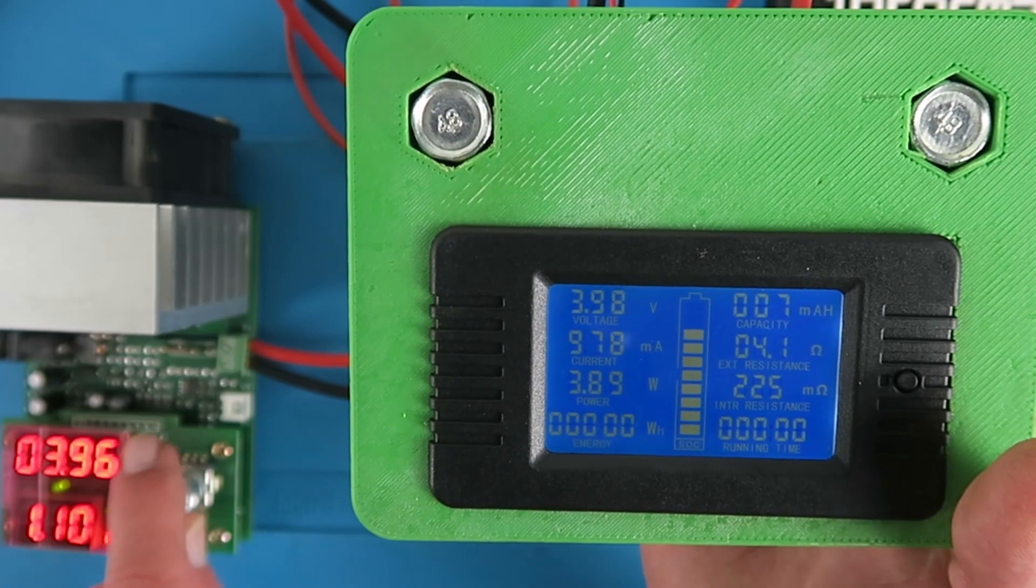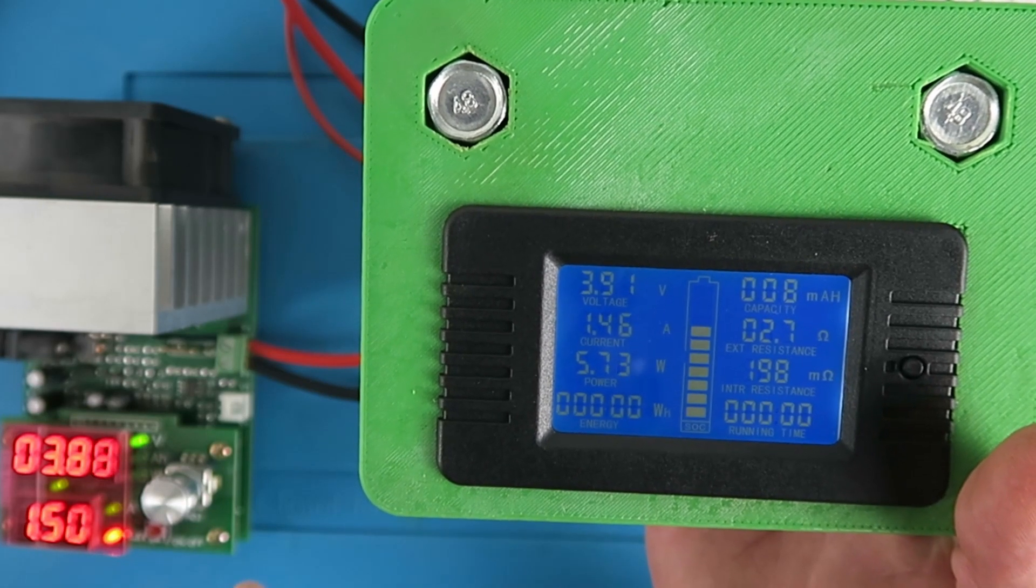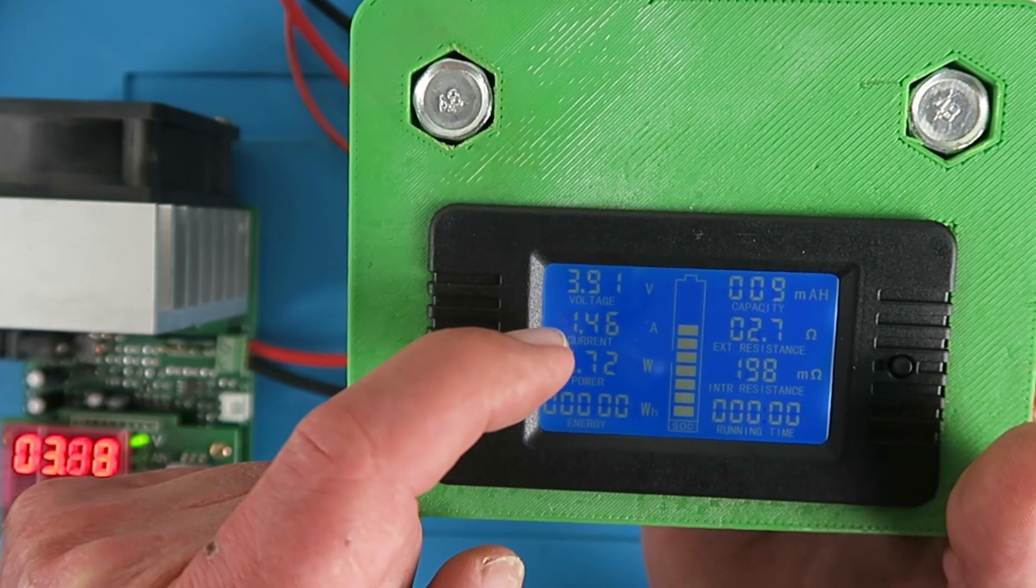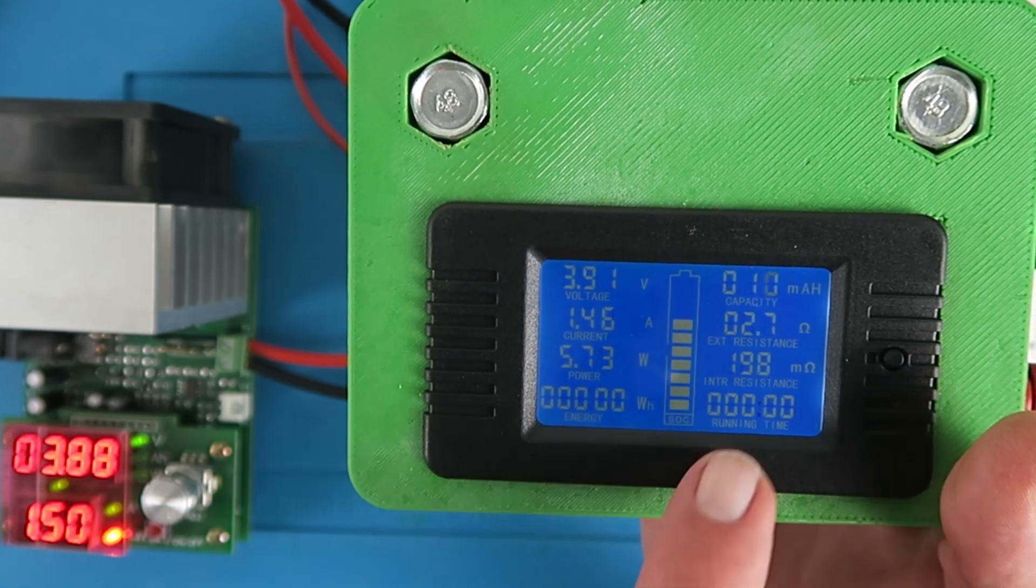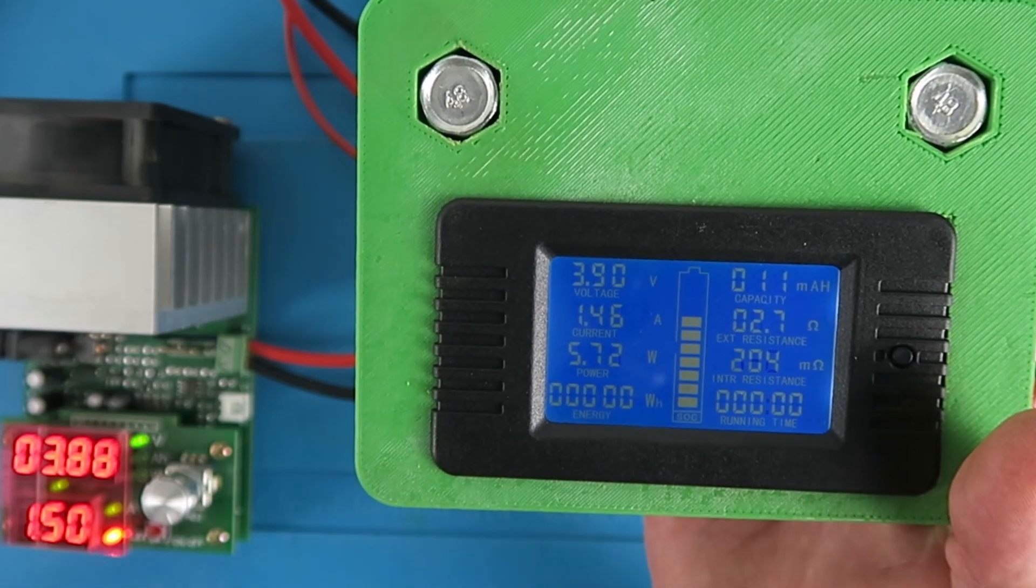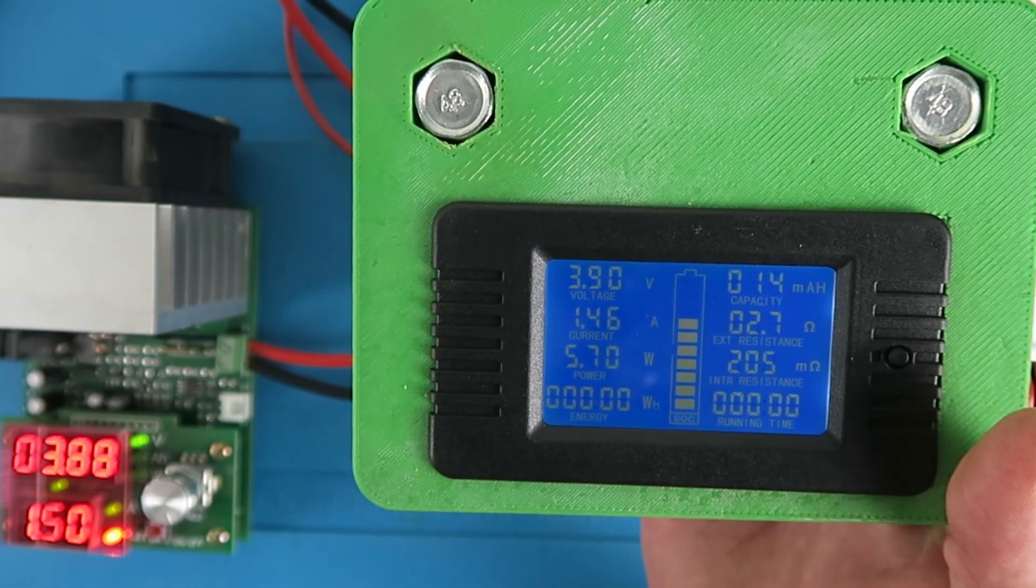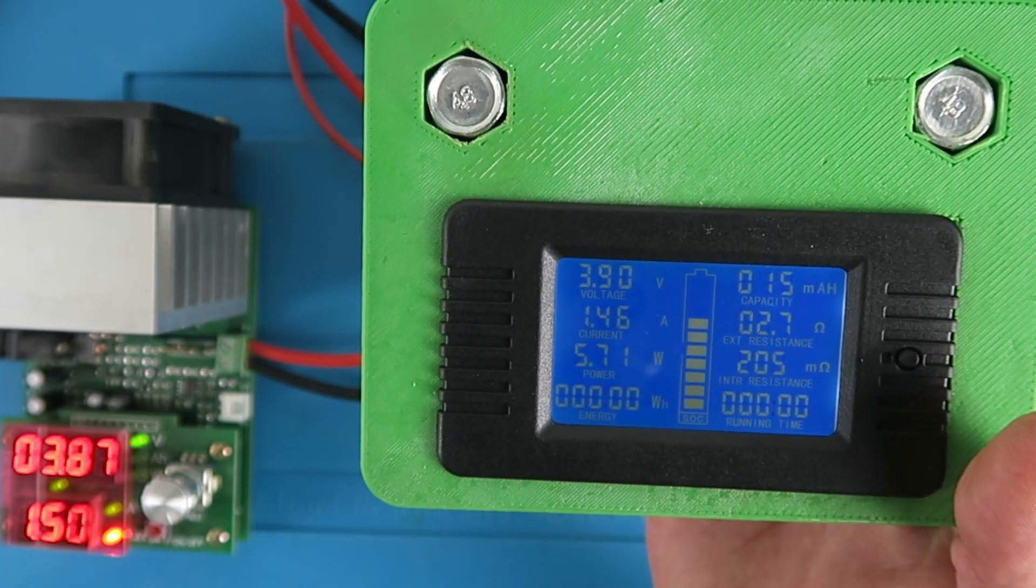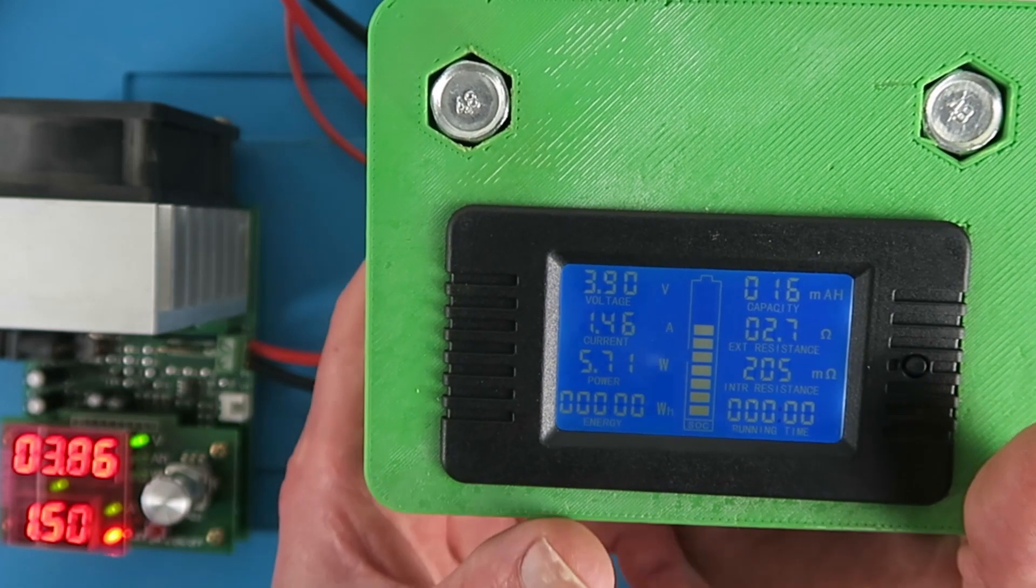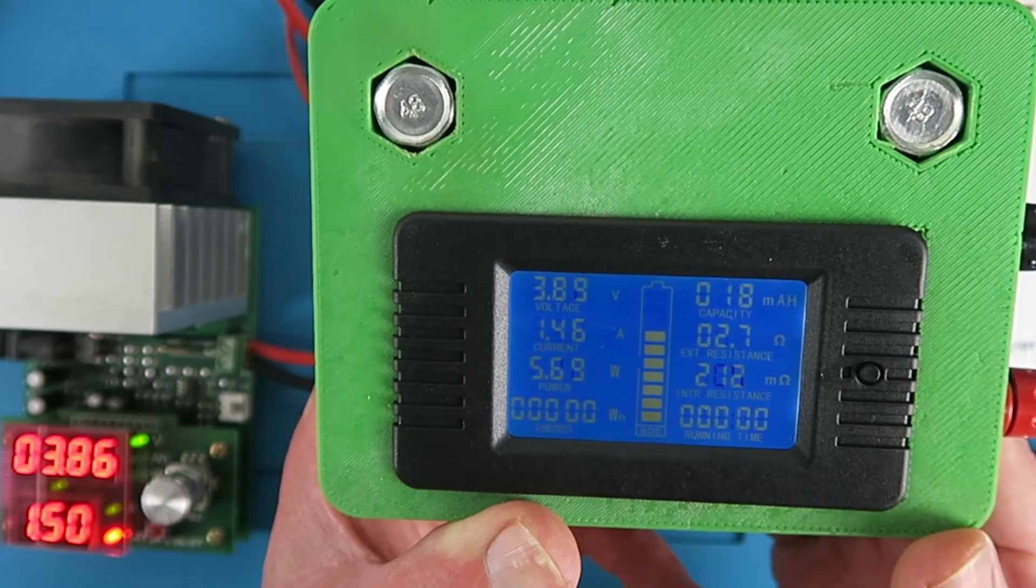And now I can increase this value so if I go up to one and a half amps you can see the display is changed there to 1.46. And interestingly the internal resistance appears to have lowered. I think this is going to be a very interesting setup that I can use to test any type of battery that I like whether it be a lead acid or lithium ion.